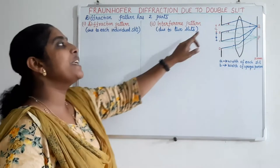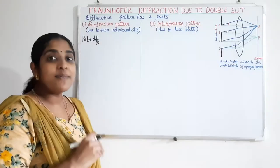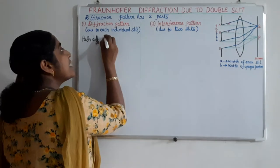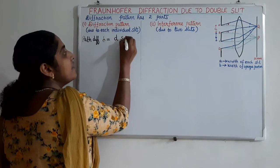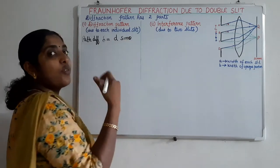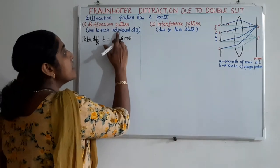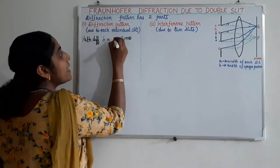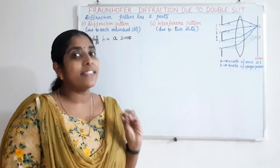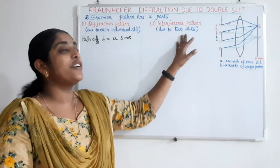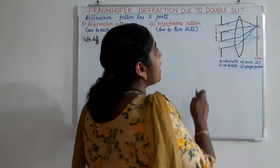The diffraction pattern is due to each individual slit. We have seen in the last video that the path difference at a single slit is D sin theta, where D is the width of the slit. Here the width of the slit is A, so the path difference due to diffraction at a single slit is A sin theta.